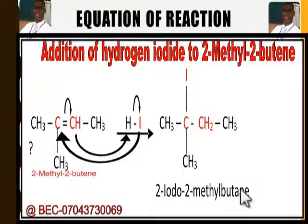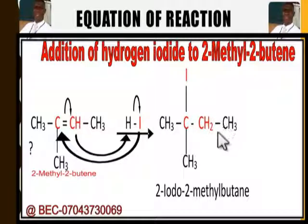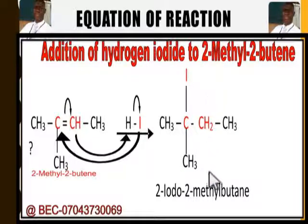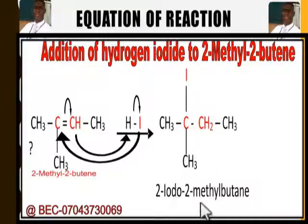Why is it 'butane'? Because we have four carbon atoms — one carbon is meth-, two carbons is eth-, three carbons is prop-, and four carbons is but-. Iodine as an attachment is called 'iodo'; a CH₃ group as an attachment is called 'methyl'. Since we have both iodo and methyl, we attach them in alphabetical order — 'i' comes before 'm', so iodo comes before methyl.